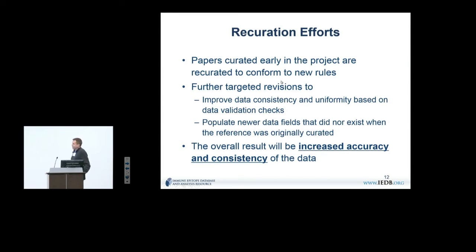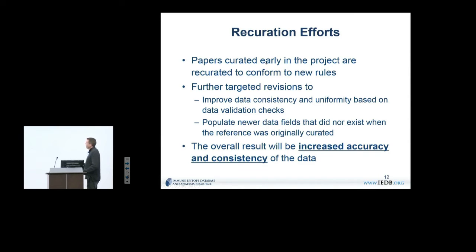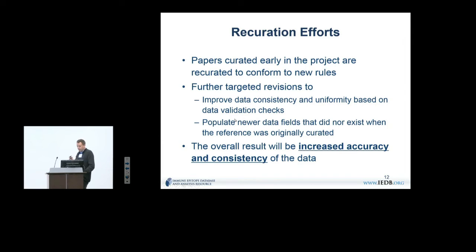Sometimes data in the IADB changes, and it should, because we go in and re-curate. As we curate data, rules change because you encounter problems you didn't anticipate before, and you might later want to distinguish between different types of cytokines or measurements. We also add automated validation rules that check for potential errors — very similar to software testing — and those errors are then flagged and fixed. The goal is to improve accuracy and consistency over time. We are re-curating along the lines of 1% to 5% per year.